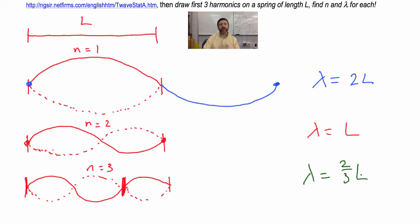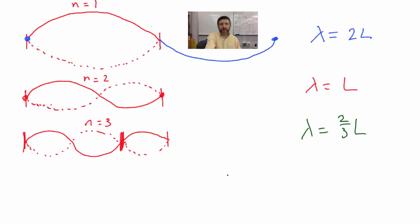Now let's see if we can figure out the pattern. All right, so what is the wavelength in terms of L and n, the harmonic number? With n equals one, lambda is two L. With n equals two, lambda is L. With n equals three, lambda is two over three L.